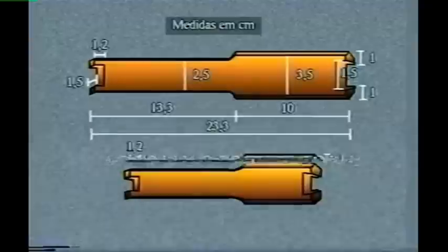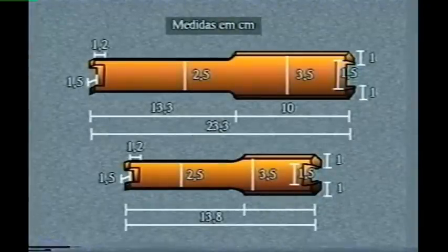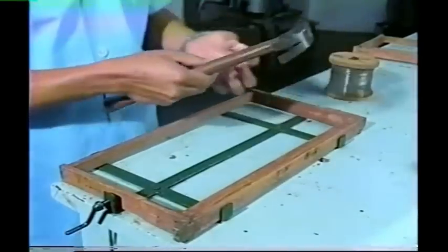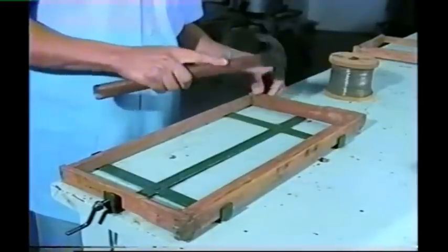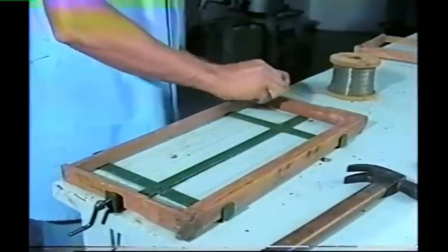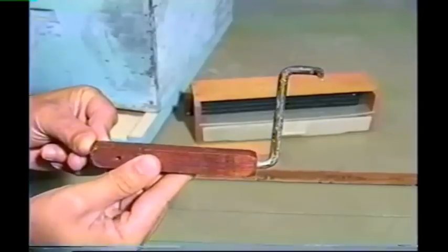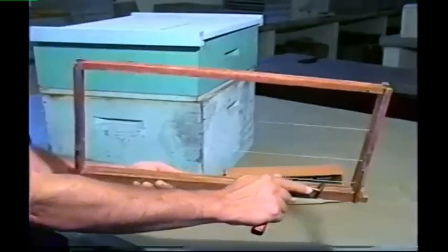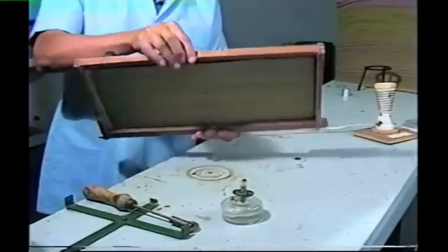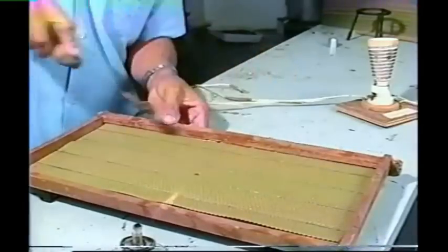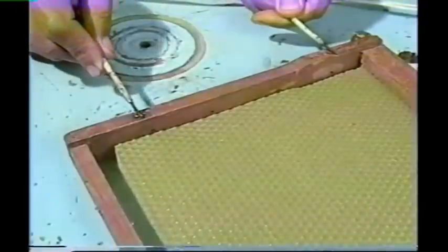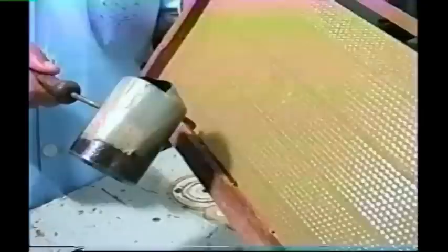A montagem dos quadros deve ser cuidadosa. Além de seguir as medidas adequadas e utilizar madeira de qualidade, é preciso atenção na colocação do arame. Ele deve ser galvanizado, bitola número 26, colocado firme e bem esticado em quatro linhas, para facilitar o trabalho com o incrustador elétrico. Os furinhos podem ser protegidos com rebites. A limpeza dos quadros é feita com um gancho próprio, que facilita o trabalho. A cera alveolada é colocada usando um incrustador, que pode ser manual, aquecido no fogo, ou um aparelho elétrico, que aquece os arames dos quadros, os quais derretem a camada superficial da placa de cera, fixando-a firmemente.